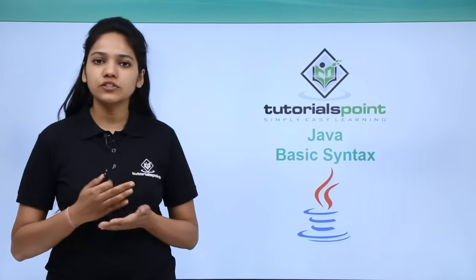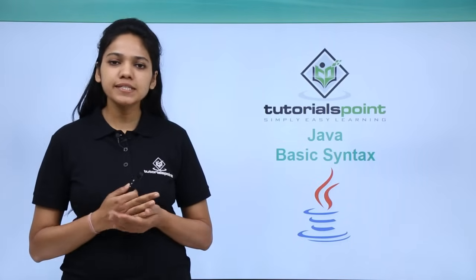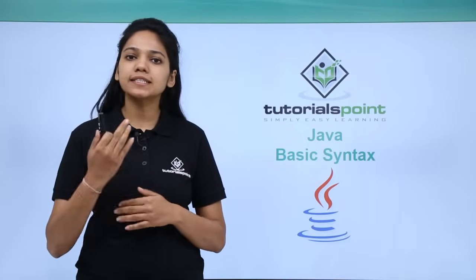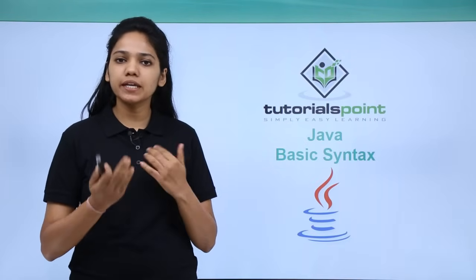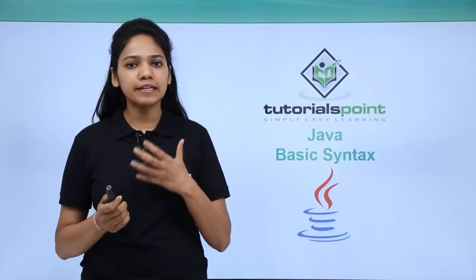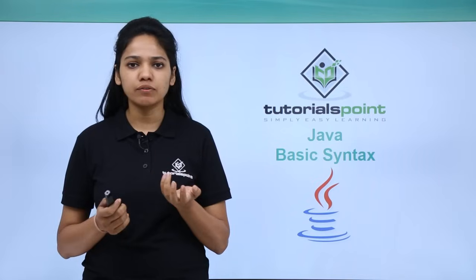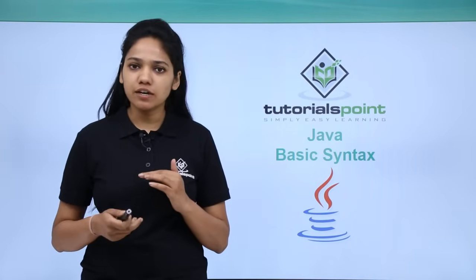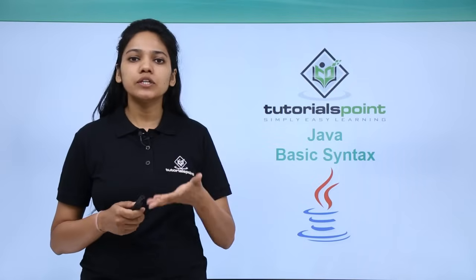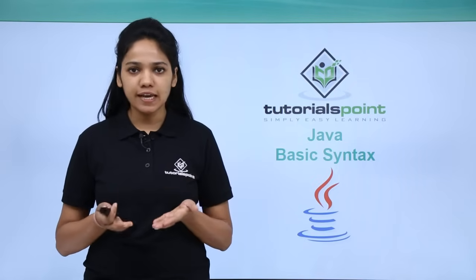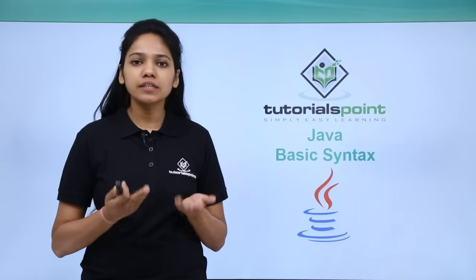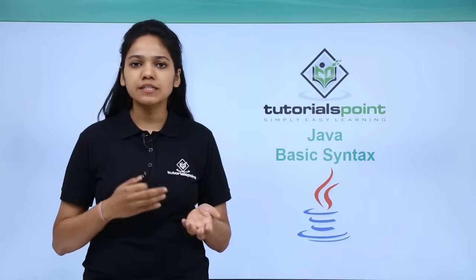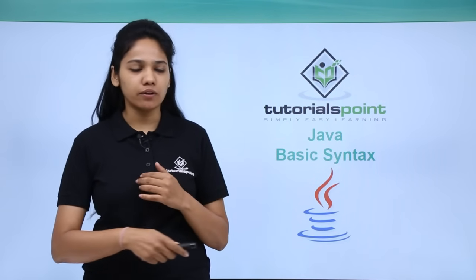By now you know what a Java program is. A Java program is nothing but a collection of objects that communicate with each other through its data and behavior, which are nothing but variables and methods. So in order to write a Java program, we need to first understand the basic syntax — how do you write, what are the naming conventions, what the compiler understands, and how do you write comments.